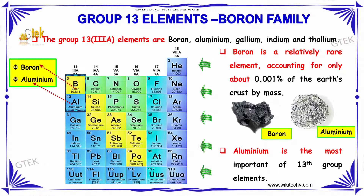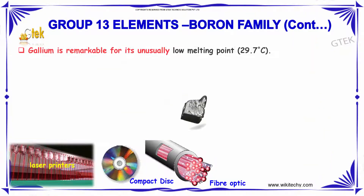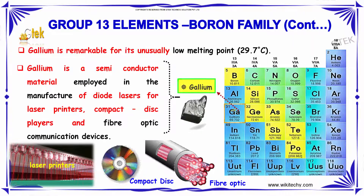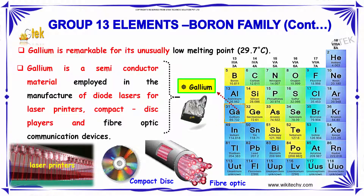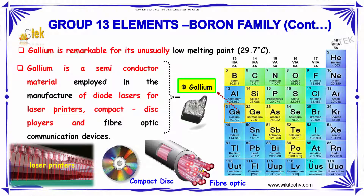Aluminium is one of the most important of the 13th group elements. The next one is Gallium. Gallium is remarkable for its unusually low melting point, which is about 29.7 degrees Celsius. Gallium is a semiconductor material employed in the manufacture of diode lasers for laser printers, CD, compact disc and fiber optic communication devices.